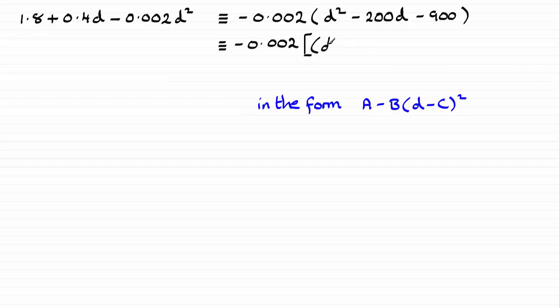In this case it's the d. And then we halve the coefficient of d, which is half of minus 200 is minus 100. Put that in there. Close the bracket and square it.